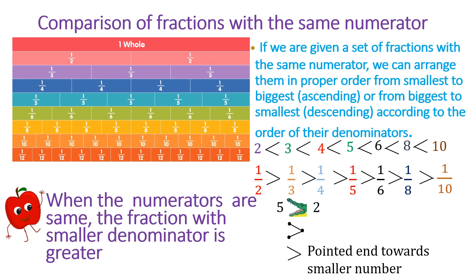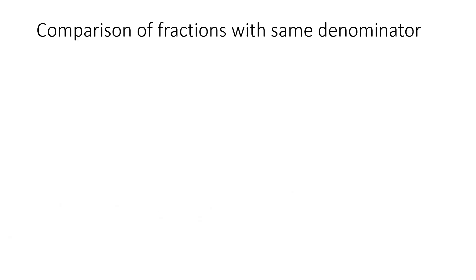I had already shown you how to write and remember these signs: a crocodile with three dots and a pointed end towards the smaller number — the crocodile always likes big numbers, so its open mouth is towards the bigger number. Next is comparison of fractions with the same denominator.